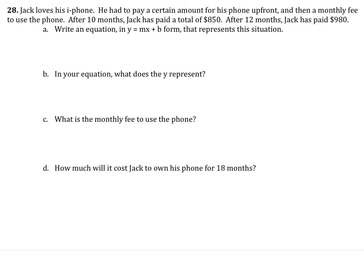So what this did is it gave us two coordinate pairs to work with. It gave us 10 and $850, that's one coordinate pair. And then it also gave us 12 and $980. The reason it's like this is because the dollars, $850 and $980, will depend on how many months have passed.